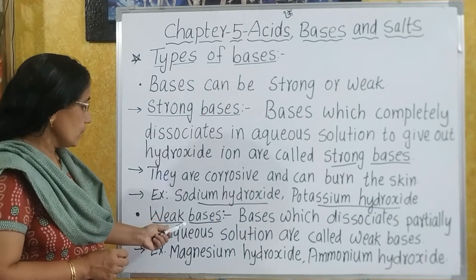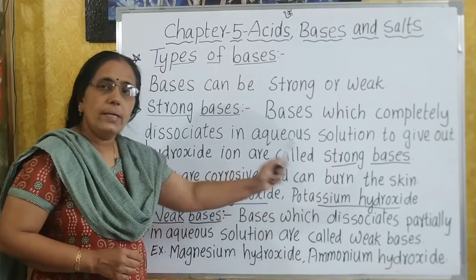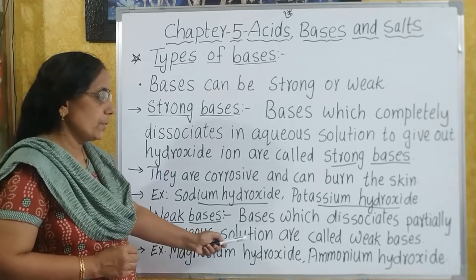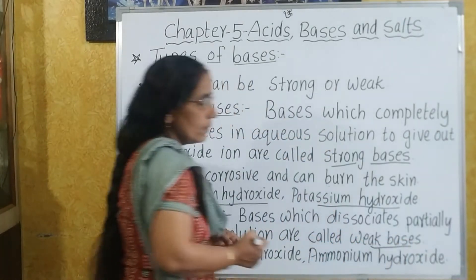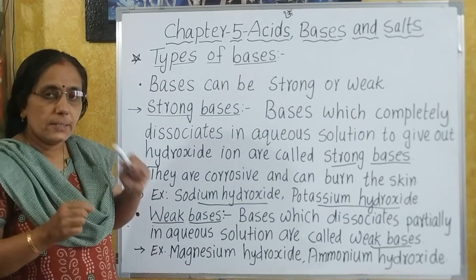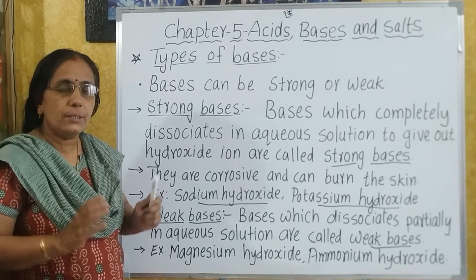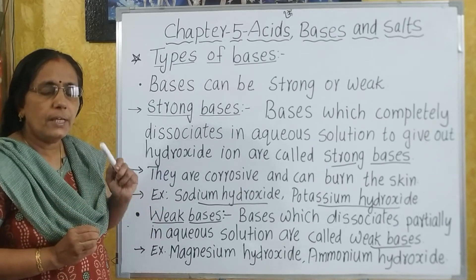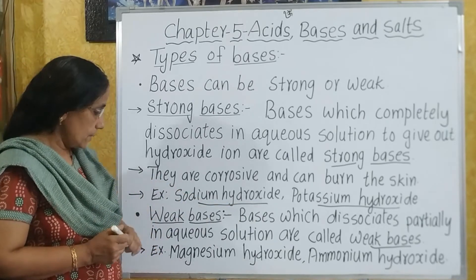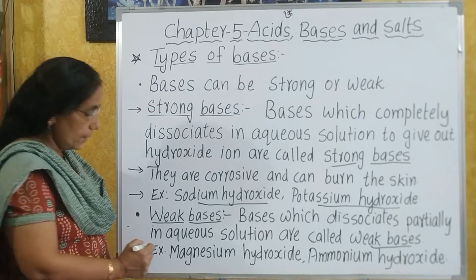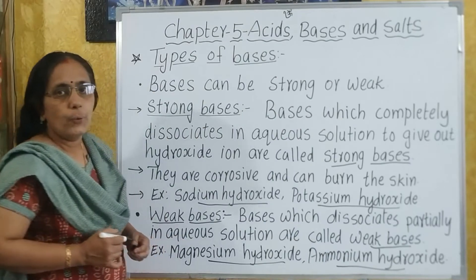Next are weak bases. The bases which dissociate only partially in aqueous solution are called weak bases. Partially means when the basic substance is dissolved in water, if it is not completely dissociated, only partially it gets dissociated. Such bases are known as weak bases. Examples are magnesium hydroxide and ammonium hydroxide.